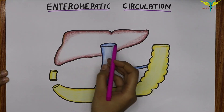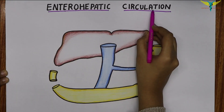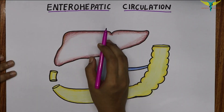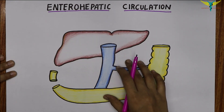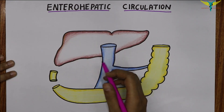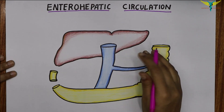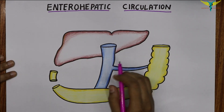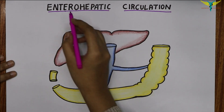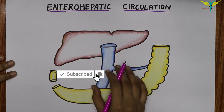In this video let's learn about the enterohepatic circulation. The bile acids and salts are absorbed from the intestine and re-excreted into the bile, and this cycle is repeated many times — that is called the enterohepatic circulation of the bile acids and bile salts.